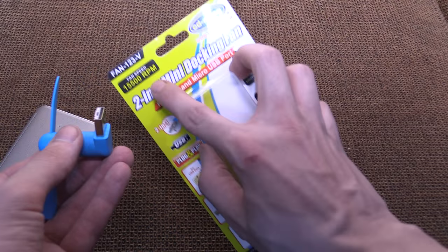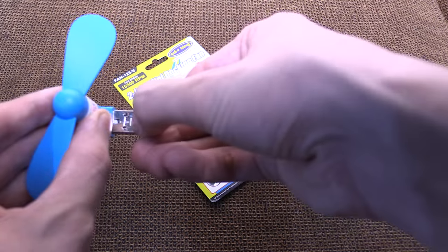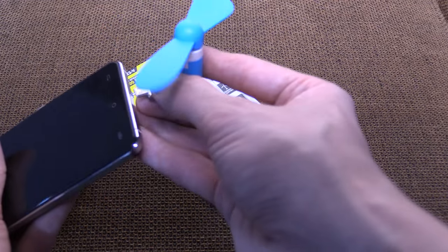And now for its party trick. You might have noticed it says two in one. Well here in the connector you can push out this bit and then you've got a micro USB connector and then you can actually plug that into your Android phone. So watch this.